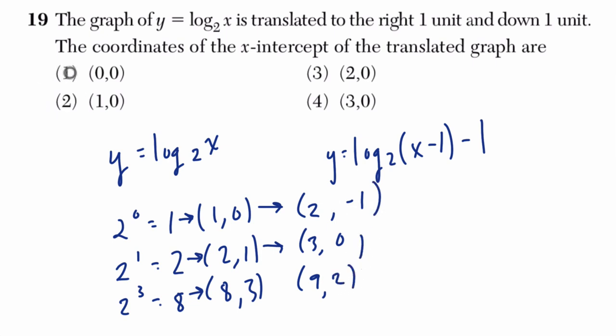So look at my choices. I don't see a 0 on here. 1, 0, 2, 0, 3, 0. I do see a 3, 0, so I'm going to stick with that one right there. All right, hope that helps.